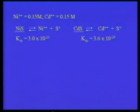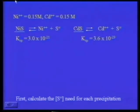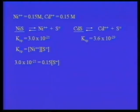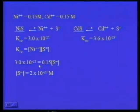First, let's calculate the concentration of sulfide needed to cause precipitation for each ion. Starting with nickel sulfide: Ksp = 3×10⁻²¹, and our nickel ion is 0.15 molar. Solving for the sulfide ion concentration, we find it equals 2×10⁻²⁰ molar. That is the maximum sulfide ion we can have and still allow 0.15 molar nickel ion to remain in solution. If there's even a little more than that, a precipitate will begin to form.